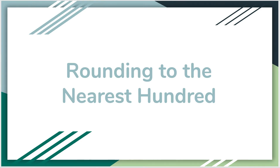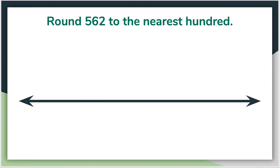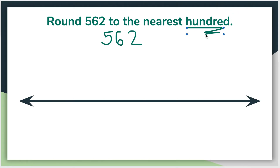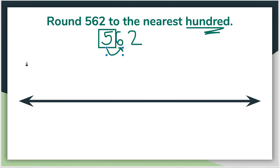We are going to be rounding to the nearest hundred today. We've been rounding to the nearest ten, so let's try to the nearest hundred. Our first question says: round 562 to the nearest hundred. Remember, we want to start by rewriting our number and box in the correct place value. Here it's asking for the nearest hundred, so out of these three digits, the five is in the hundreds place. We can draw our arrow next door to help us out.